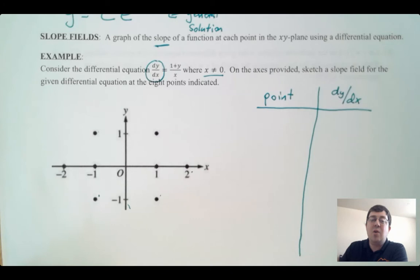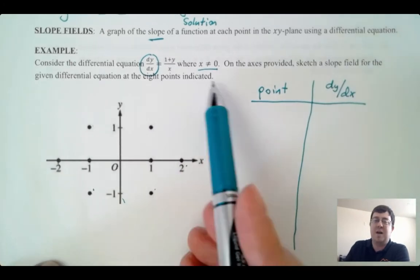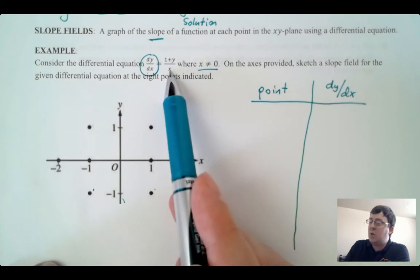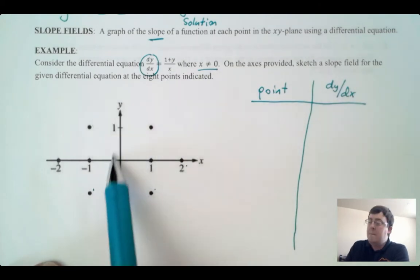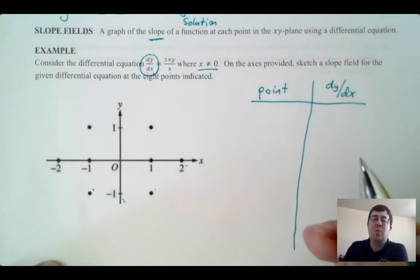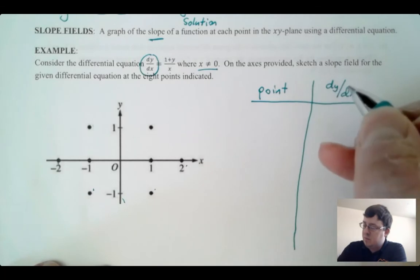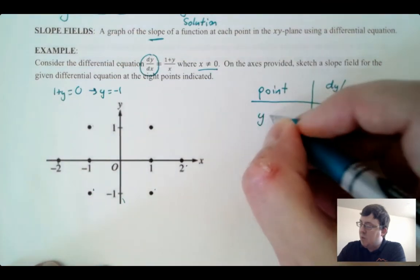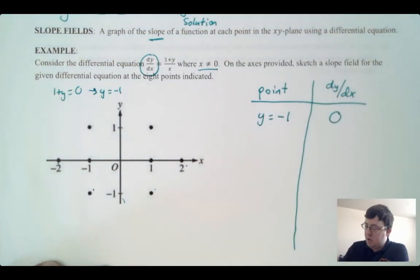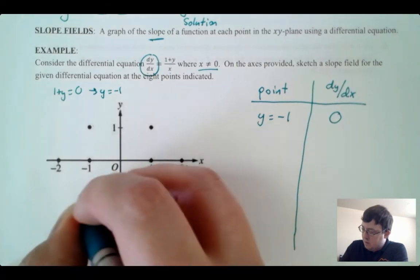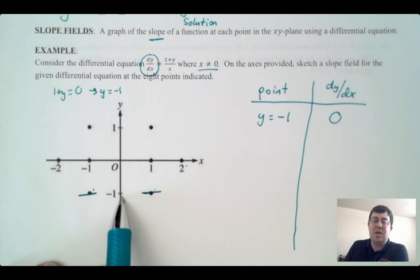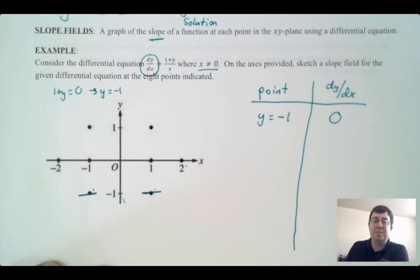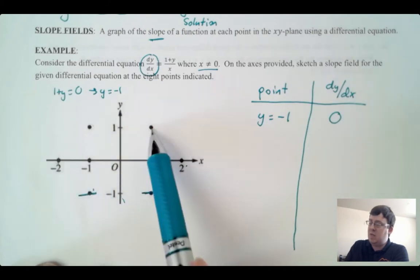First, I look for slopes that are zero or undefined. Undefined: x = 0 — already excluded. Zero: when the numerator 1 + y = 0, i.e., y = −1. So at any point where y = −1, the slope is zero. There are two such points right there on the graph. That leaves six more points to find — three in a little triangle on each side.